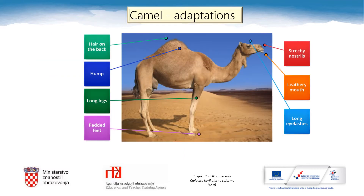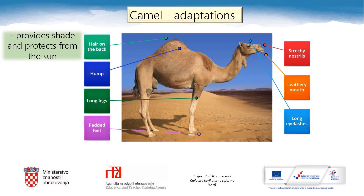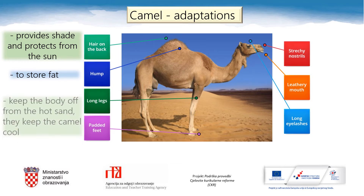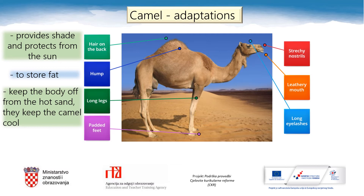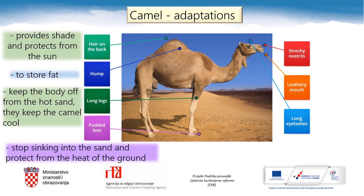I believe this is something you came up with after you finished the game. Have you thought of the reasons how these things help the camel survive? How does the hair on the back help the camel survive? The hair provides shade and protects the camel from the sun. What about the hump? It's used to store fat, believe it or not. Long legs are there to keep the body off from the hot sand and to keep the camel cool, while the padded feet stop the camel from sinking into the sand and protect it from the heat of the ground.